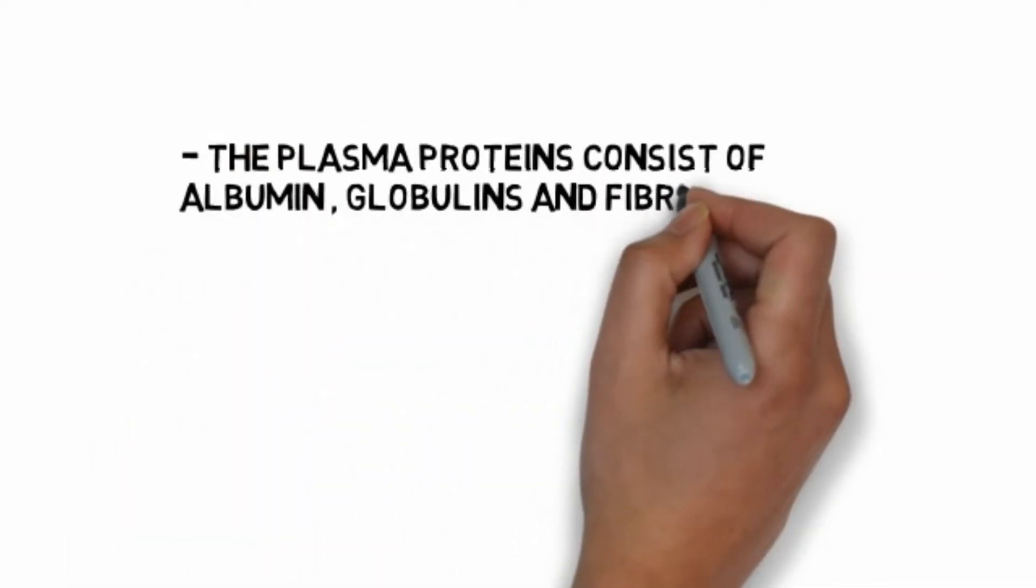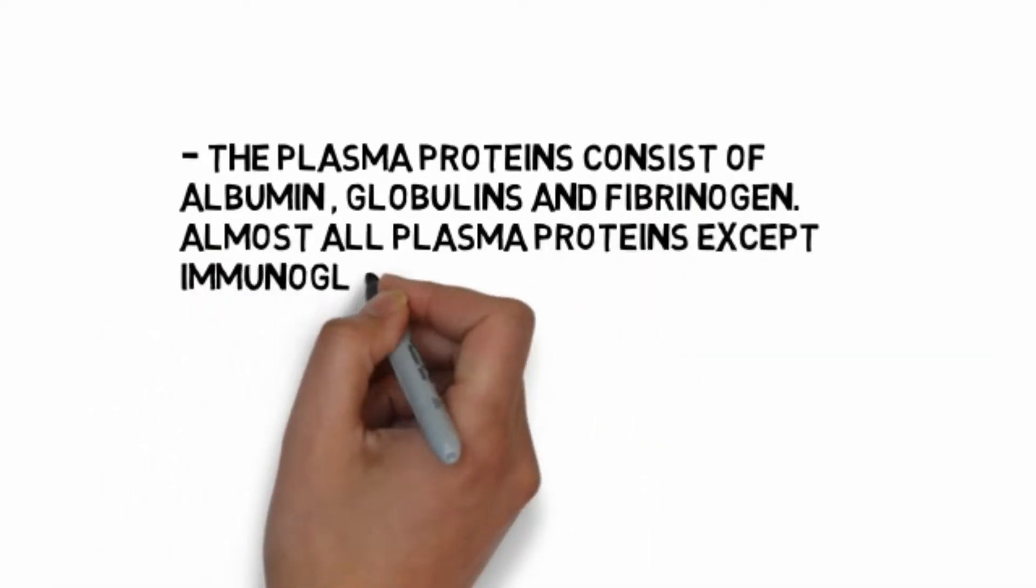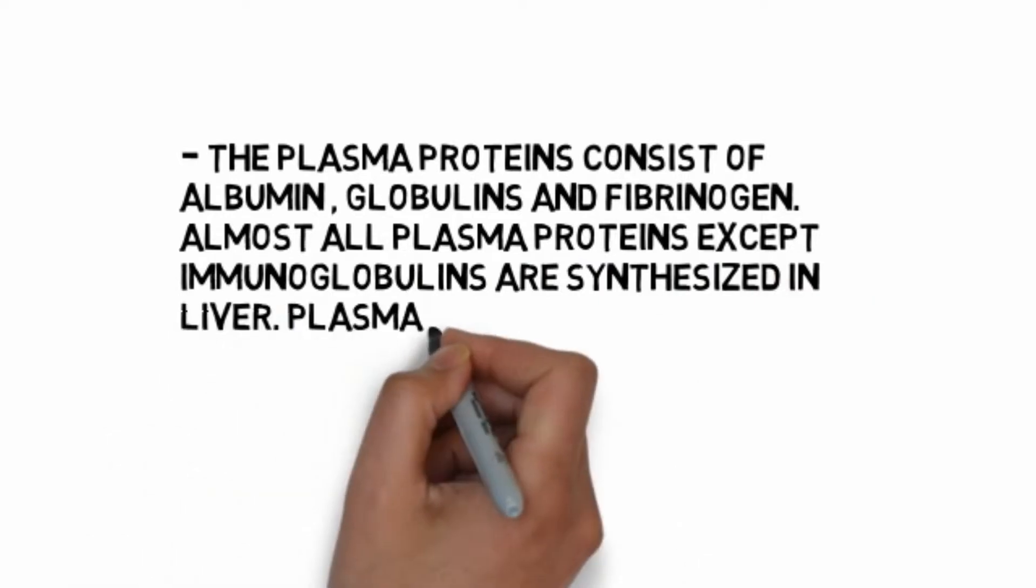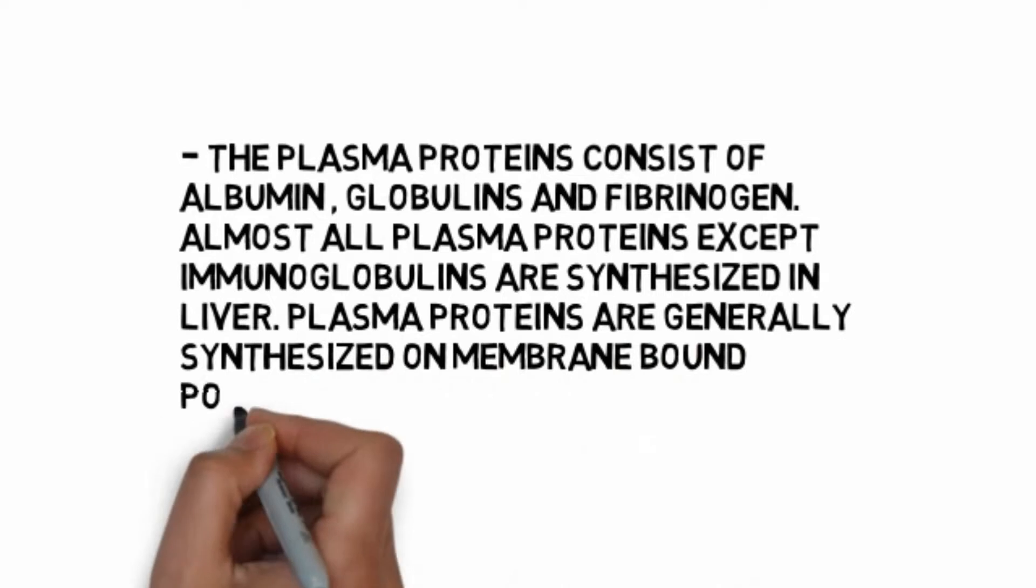Plasma proteins consist of albumin, globulin, and fibrinogen. Almost all plasma proteins except immunoglobulins are synthesized in liver. Plasma proteins are generally synthesized on membrane-bound polyribosomes, and most plasma proteins are glycoproteins.